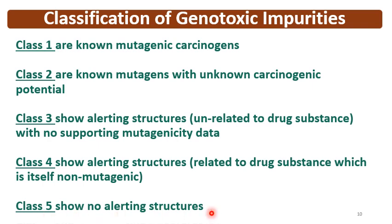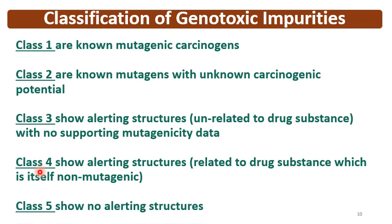Class 5 shows no alerting structures. Going from Class 1 to 5: Class 1 are mutagenic and carcinogenic; Class 2 are mutagens with unknown carcinogenic potential; Class 3 have alerting structures unrelated to the drug substance; Class 4 have alerting structures related to the API; Class 5 have no alerting structure and are treated as non-mutagenic. Moving from Class 1 to 5, toxicity decreases; Class 1 impurities are the most toxic, and Class 5 impurities have no alerting structure and can be treated as non-mutagenic.